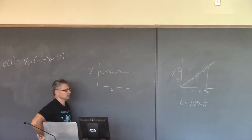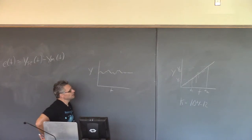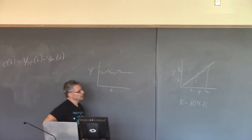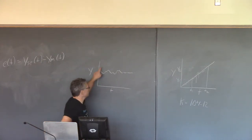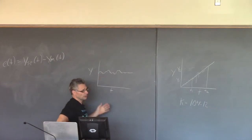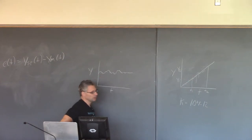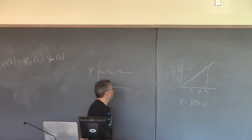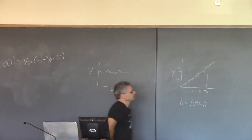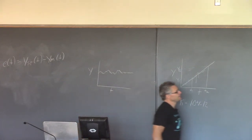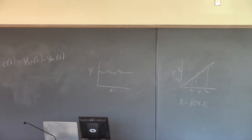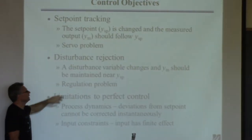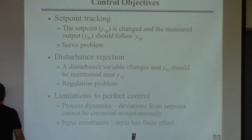The set point is not changing. That's called disturbance rejection. Disturbances are causing the output to deviate from the set point. You don't usually know what those disturbances are, but you can see their effect. The controller's goal is to try to drive that error to zero. We call this disturbance rejection — sometimes called regulation. That's the most common scenario.